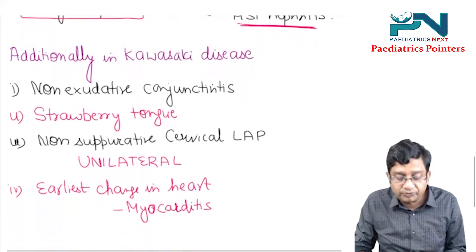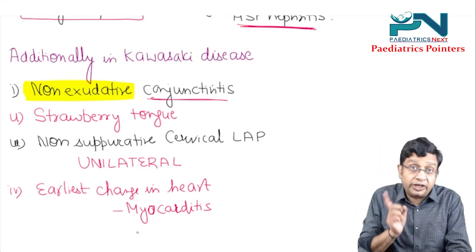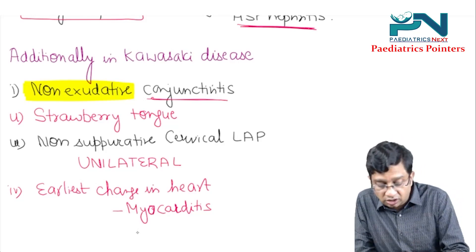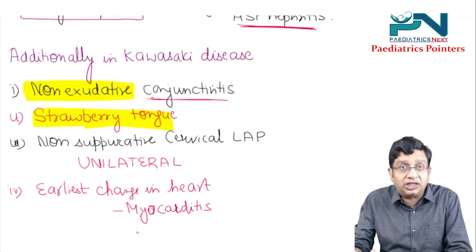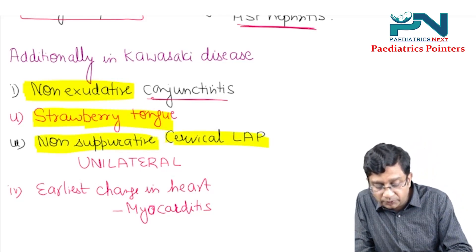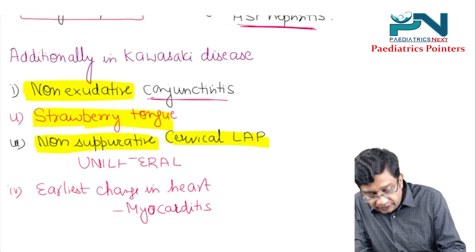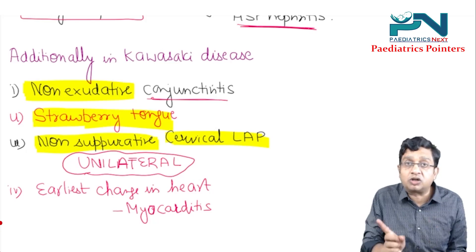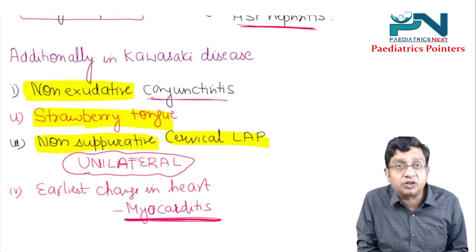Additionally in Kawasaki disease, four important points to remember: there is conjunctivitis, but it is non-exudative — meaning infection is not the cause. There is strawberry tongue, which can also be seen in scarlet fever but that responds to antibiotics, whereas here it does not. There is non-suppurative cervical lymphadenopathy, and importantly this cervical lymphadenopathy is unilateral. Finally, the earliest change seen in the heart is myocarditis, not coronary artery aneurysm.